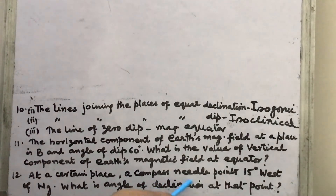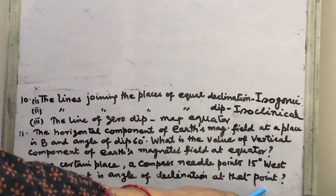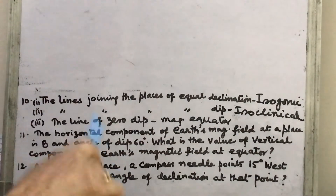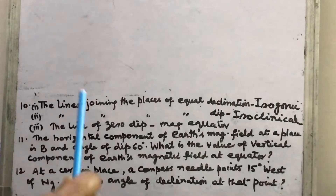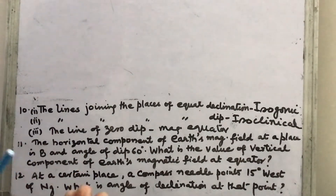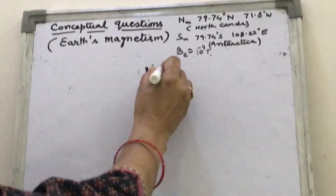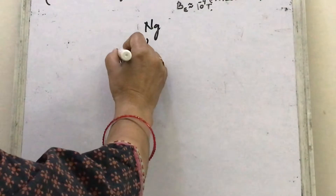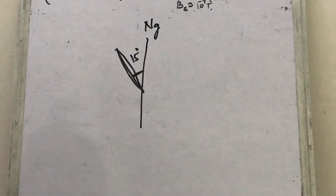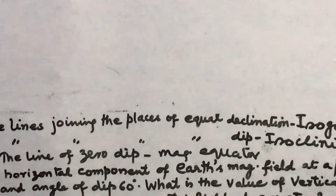Last question: at a certain place, a compass needle points 15 degrees west of geographical north. What is the angle of declination at that point? The angle of declination is defined as the angle made by the compass needle from the true geographical north. Since the needle makes 15 degrees from the true north, the angle of declination is 15 degrees. I hope you understand the questions and can get the correct answers.